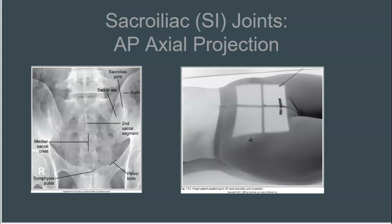The long axis of the median sacral crest is aligned with the long axis of the collimated field. The second sacral segment is at the center of the exposure field, and the SI joints and the first through fourth sacral segments are all included within the exposure field.